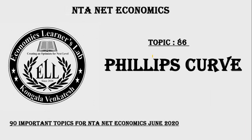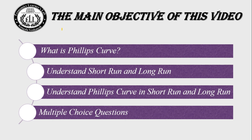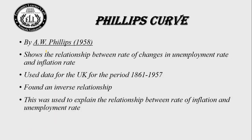Let's begin today's topic. Topic number 86: Phillips Curve. This is a very important topic for the intermediate economics exam. From this topic you can expect one question. If you see the old question papers, you can find one question from this topic every year. In this video we are going to learn: what is a Phillips curve, understand short run and long run, understand the Phillips curve in short run and long run, and after that we will solve some multiple choice questions.